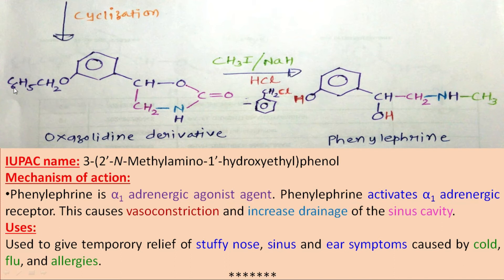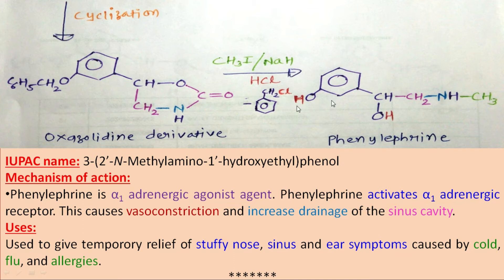The benzyl group will be removed as benzyl chloride, and the formed compound is known as phenylephrine. Here three functional groups are present: one is phenol, the second is alcohol, and an amine is also present. When we focus on the priority rule, the phenol comes first, so this compound is phenol. On the third position, an ethyl group is attached.